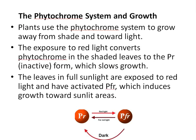Regarding phytochrome system and growth: plants use the phytochrome system to grow away from shade toward light. In shaded leaves, phytochrome is converted to PR, the inactive form, and this slows the growth process. When leaves are in full sunlight, exposed to red light, they have activated PFR form, which induces growth toward the sunlight area. So, PR is the inactive form, and upon absorption of red light, it gets converted into the active PFR form, which then induces growth toward sunlight areas.